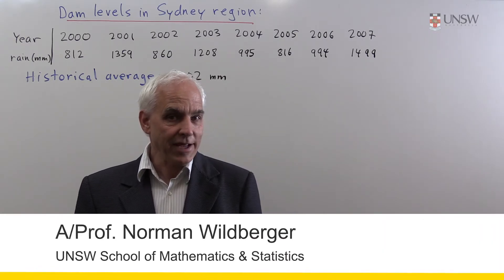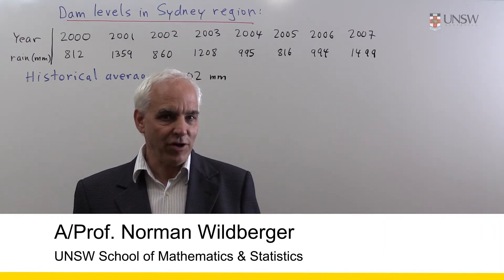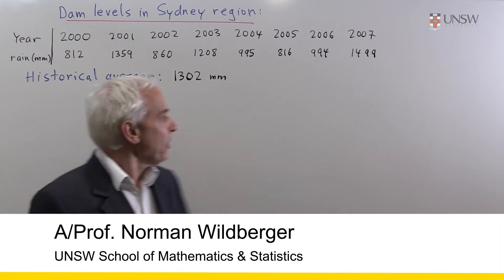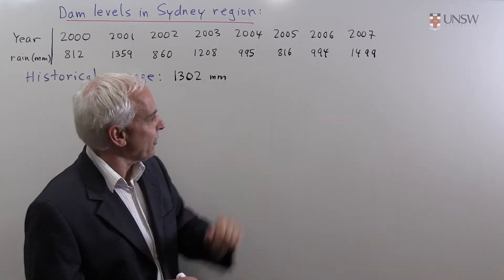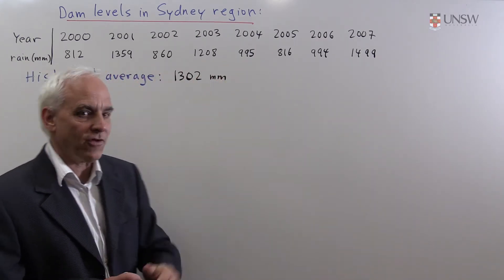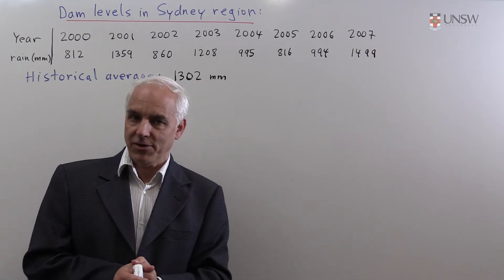In this question, we're looking at an issue of rainfall in the Sydney area. From the years 2000 to 2007, we have eight readings of annual rainfall in millimeters.